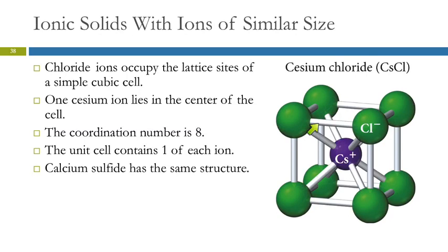Only one eighth of each corner ion is inside the cubic unit cell, so there's one anion and one cation — one of each ion in the unit cell. Calcium sulfide is another ionic compound with the same structure.